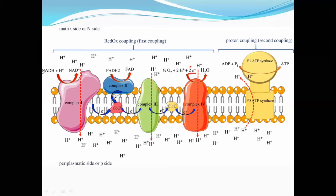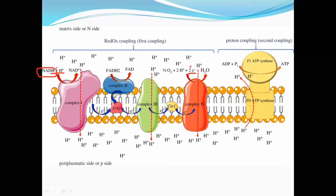Now let's start from NADH. In the NADH case, the electrons from NADH are transferred to complex 1. As a result, the energy released is involved in the transfer of protons — hydrogen ions — from the matrix to the intermembrane space.